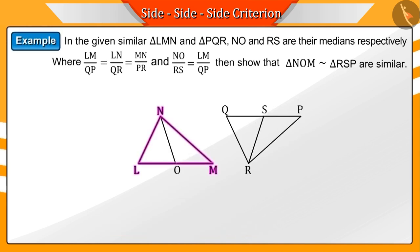In the given similar triangles LMN and PQR, NO and RS are their medians respectively, where LM by QP equals LN by QR equals MN by PR and NO by RS equals LM by QP. Then prove that triangles NOM and RSP are similar to each other.